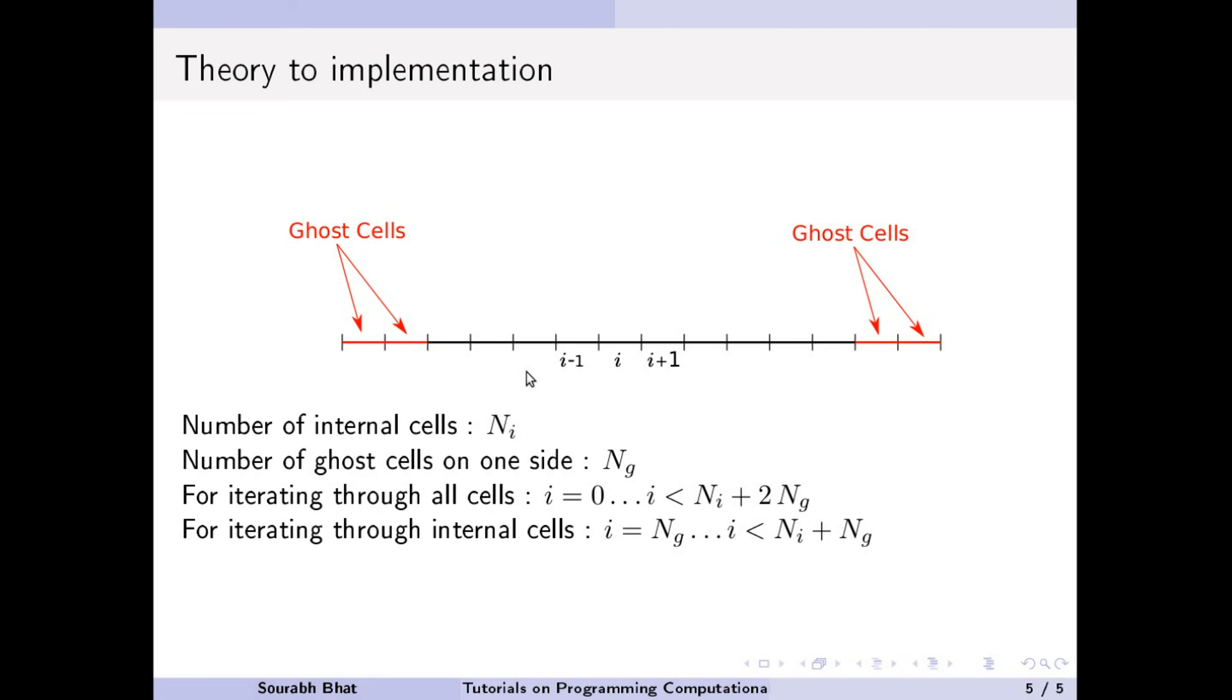If we count 1, 2, 3, 4, 5, 6, 7, 8, 9, 10, that particular cell is going to be 10 plus 2, so 12 in our case. So that is what will happen. So we will have our index going from Ng to Ni plus Ng. So thank you very much and see you soon.